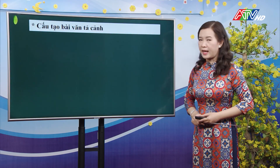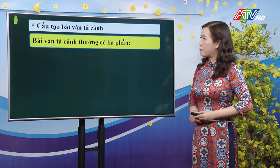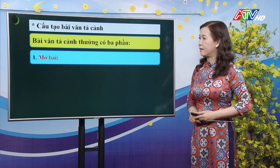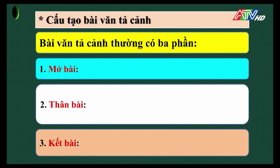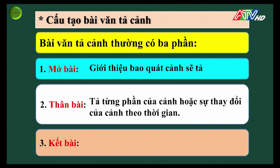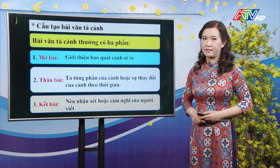Cô sẽ nhắc lại cho các con cấu tạo của một bài văn tả cảnh. Bài văn tả cảnh thường gồm có 3 phần: mở bài, thân bài và kết bài. Ở phần mở bài, các con sẽ giới thiệu bao quát cảnh sẽ tả. Phần thân bài tả từng phần của cảnh hoặc sự thay đổi của cảnh theo thời gian. Kết bài nêu nhận xét hoặc cảm nghĩ của người viết về cảnh sẽ tả.